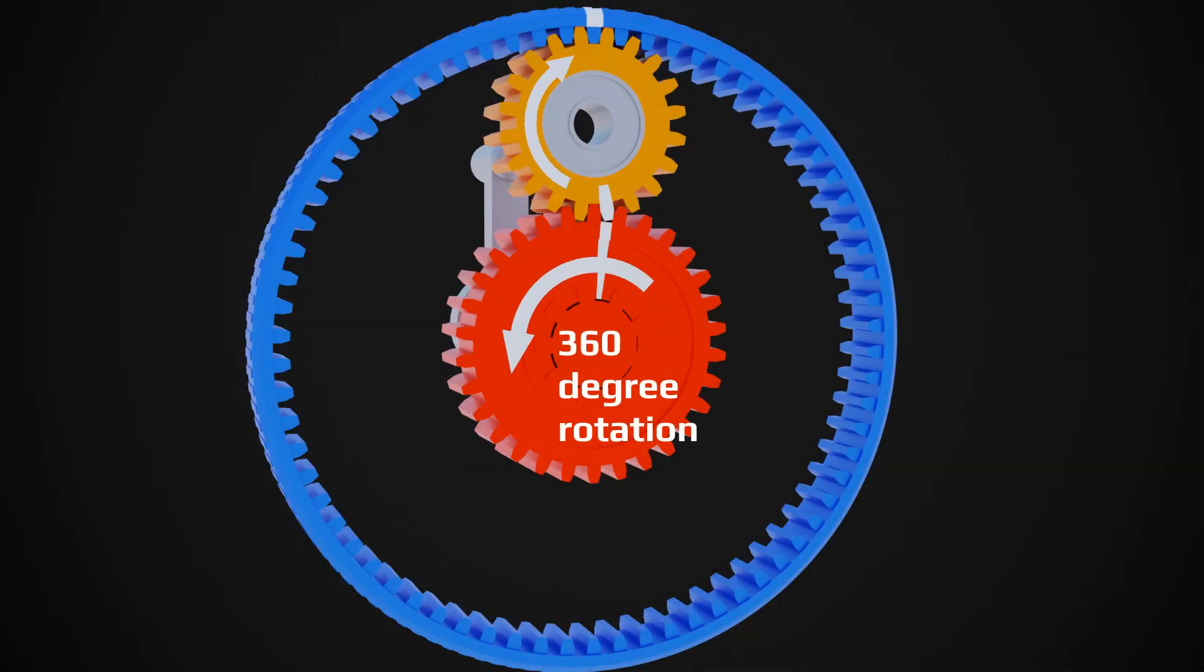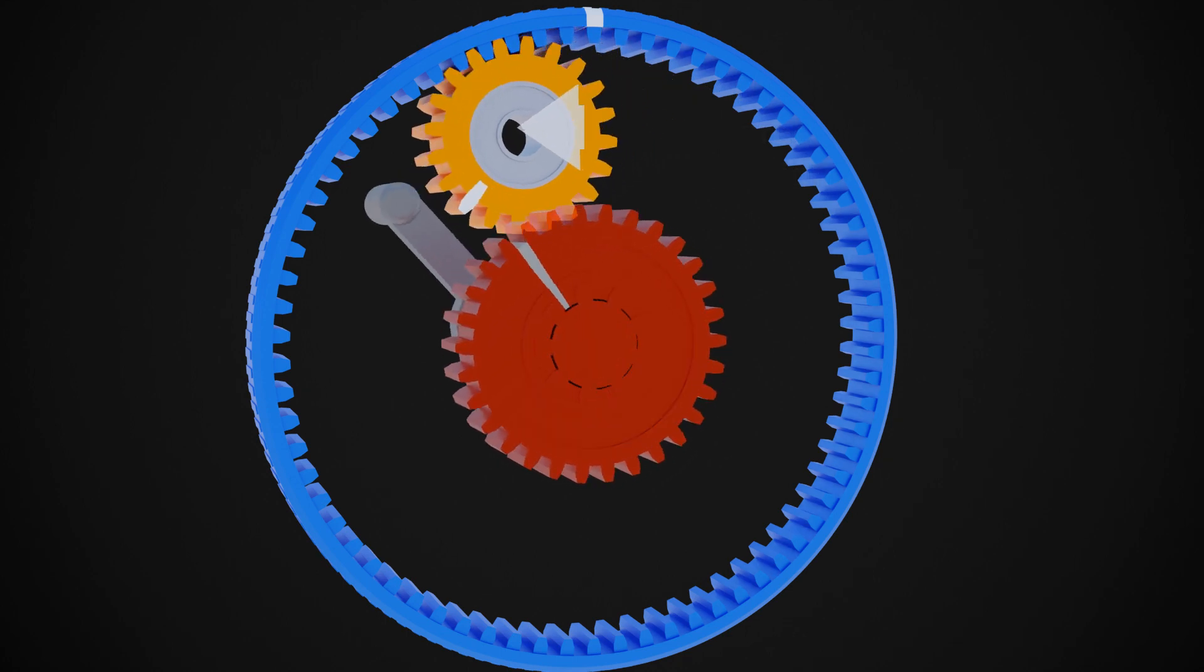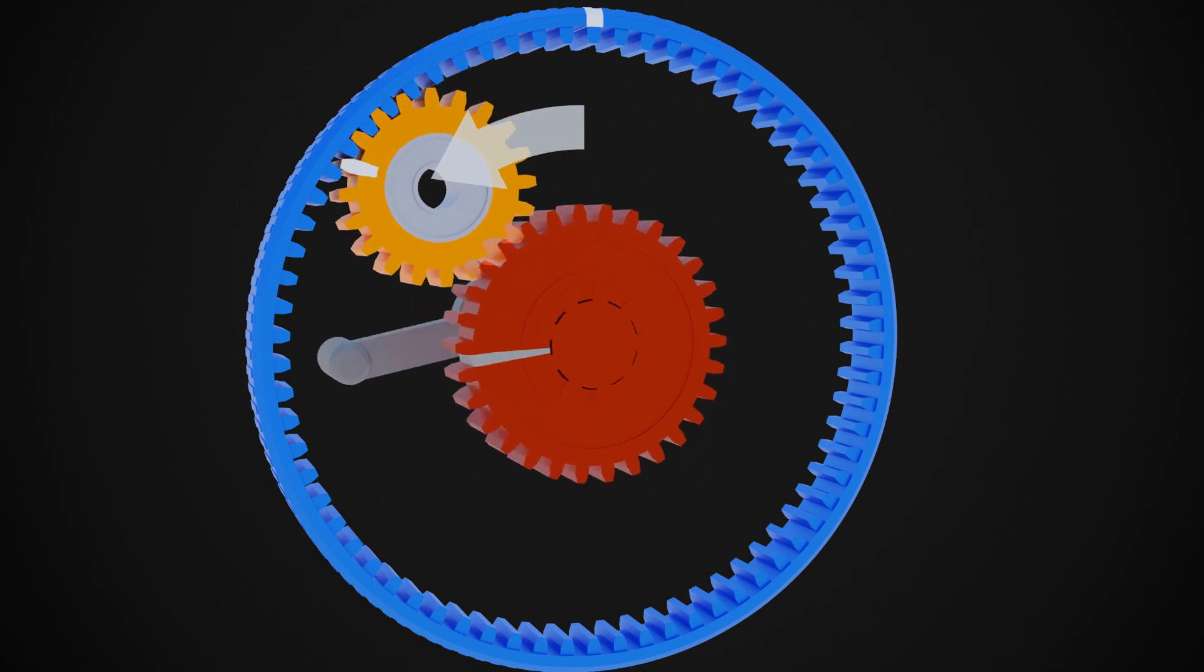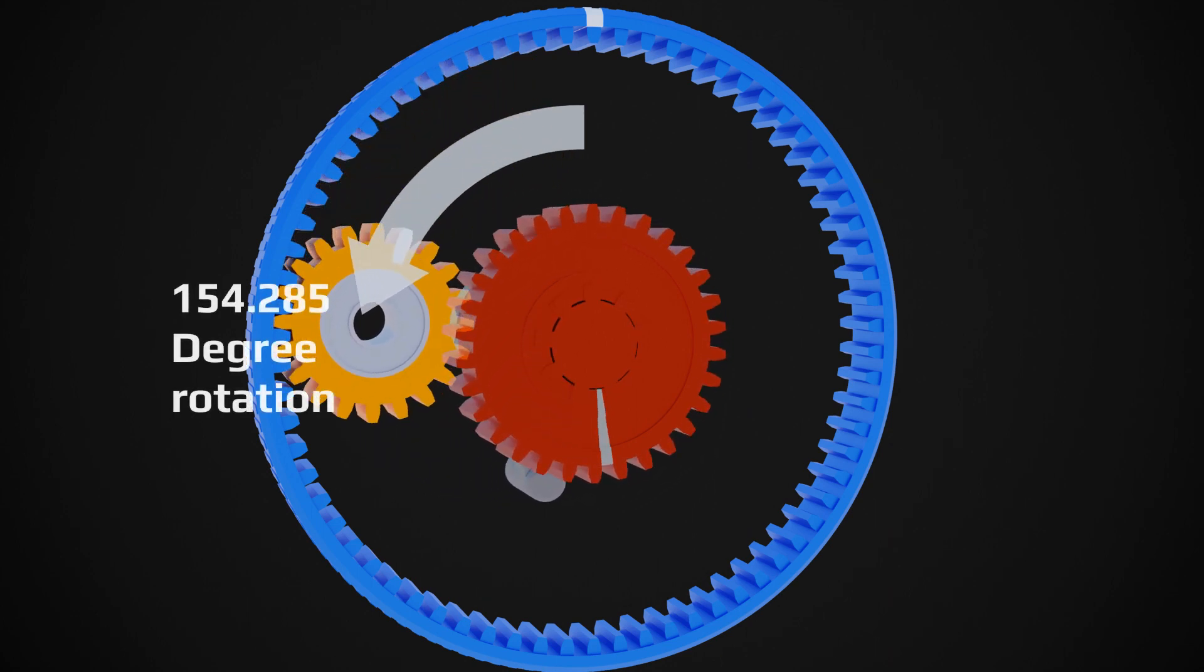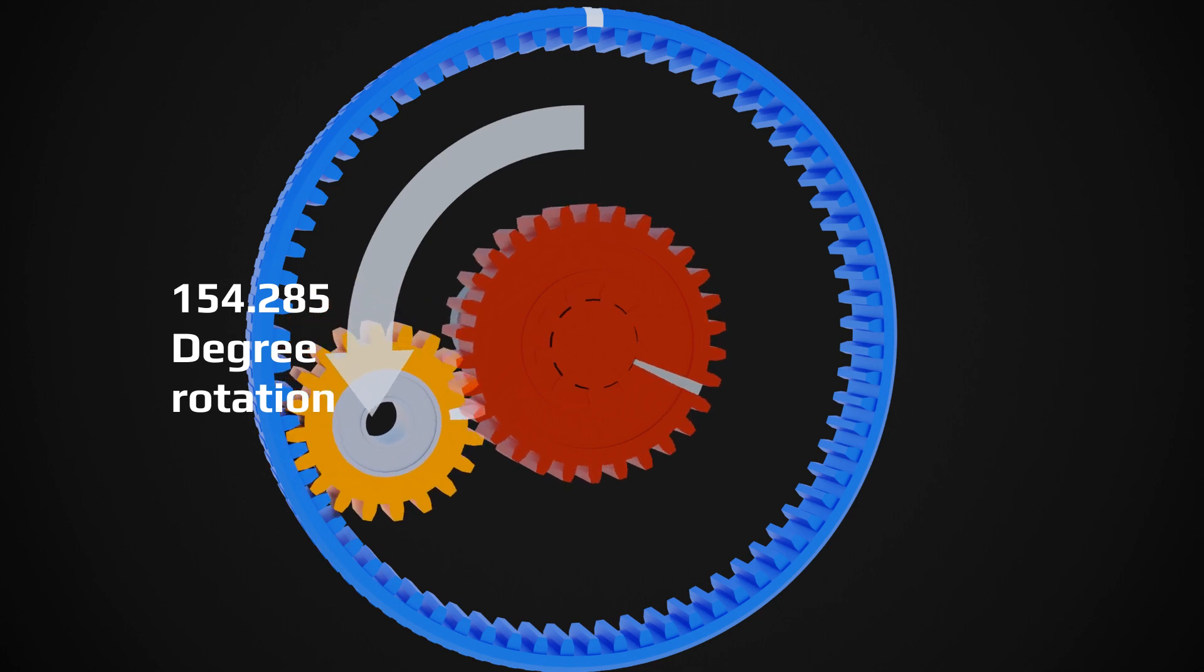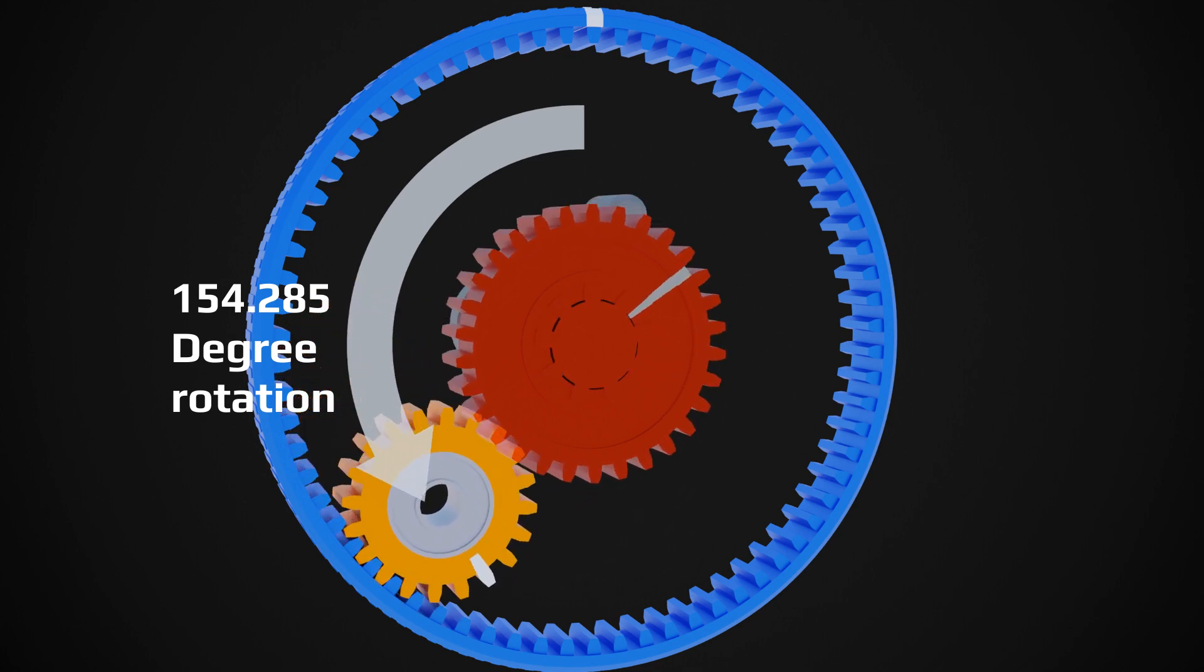Let's assume initially the sun gear rotates 360 degrees. Planet gear will walk on ring gear the same number of teeth as sun gear has. Walking 30 teeth of ring gear among 70 teeth makes the carrier rotate only 154.285 degrees.